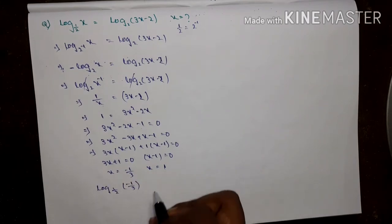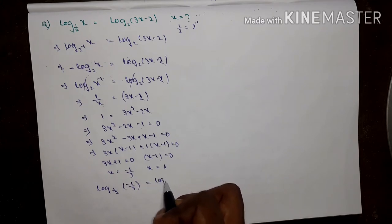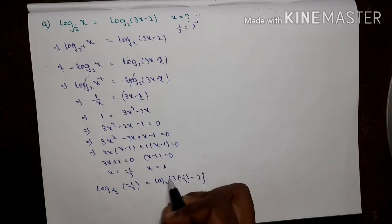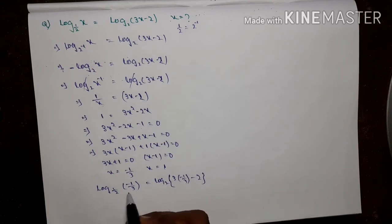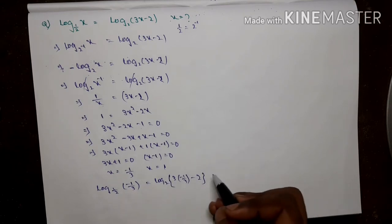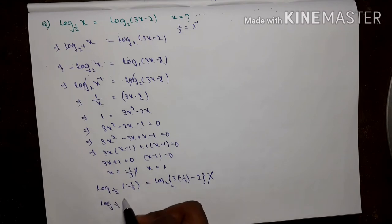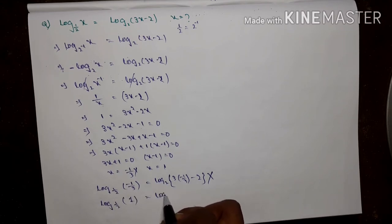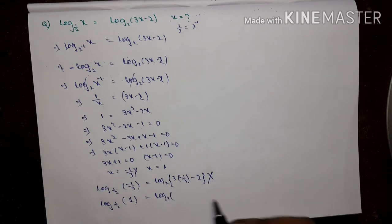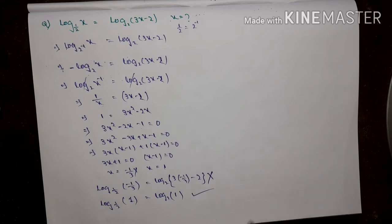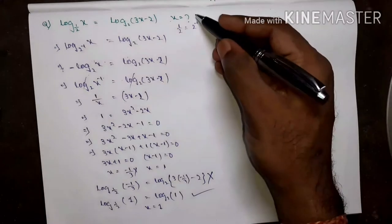By factorization — multiply is minus 3, addition is minus 2 — we get 3x squared minus 3x plus x minus 1 equals 0. Taking common: 3x(x-1) plus 1(x-1) equals 0, so (3x+1)(x-1) equals 0. Values: x equals minus 1/3 or x equals 1. Substituting x equals minus 1/3 gives log of a negative, which cannot be determined. Only x equals 1 is satisfied.